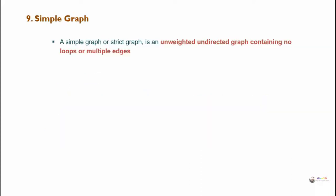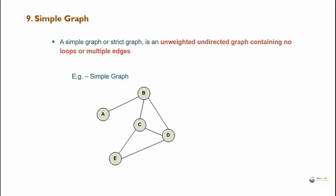A simple graph, also called a strict graph, is an unweighted undirected graph containing no loops or multiple edges. The example shown is a simple graph because it is unweighted, undirected, and has no loops or multiple edges between any two vertices.